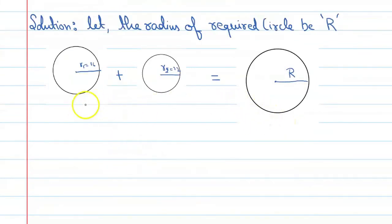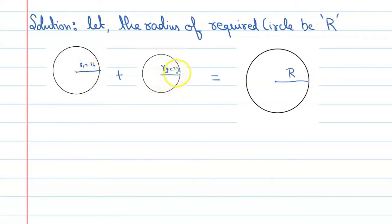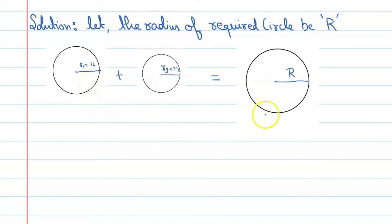Looking at the figure for help, we have two circles. One circle has radius 16, and the other circle has radius 12. We add the areas of the two circles, and as a result, we will find the third circle.